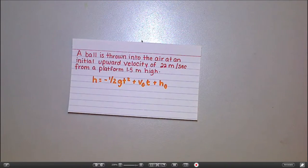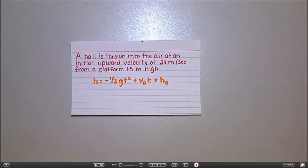Set up the equation for one of these problems. So let's say you're given this situation. A ball is thrown into the air at an initial upward velocity of 22 meters per second from a platform 1.5 meters high.